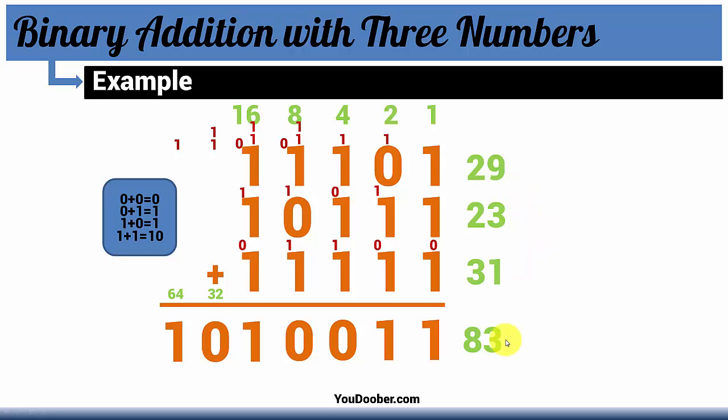Pretty simple, right? And you can see how you can just take this method and apply it to any number of binary additions. Whether you have 4 numbers, 5 numbers, it really doesn't matter as long as you follow the flow.